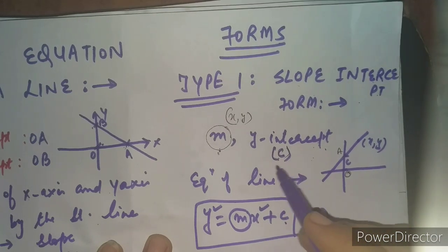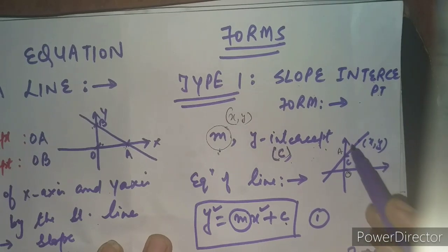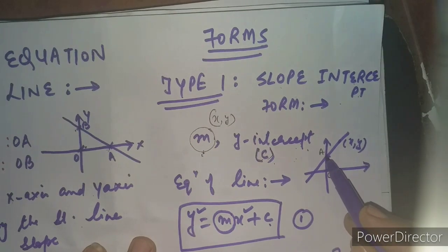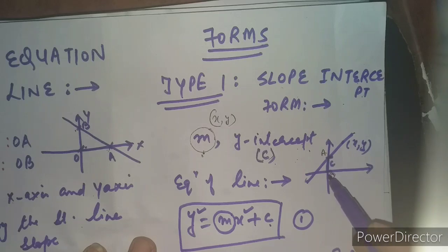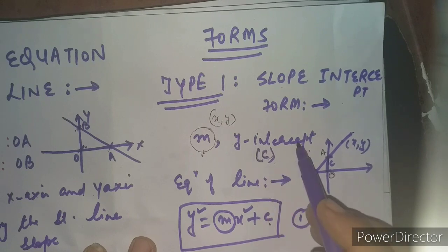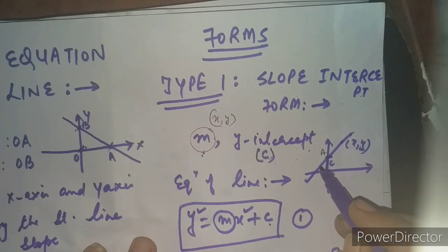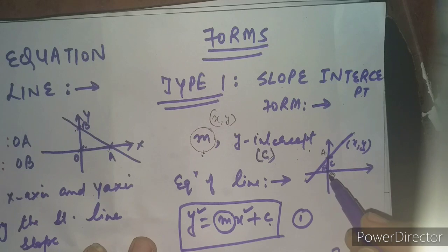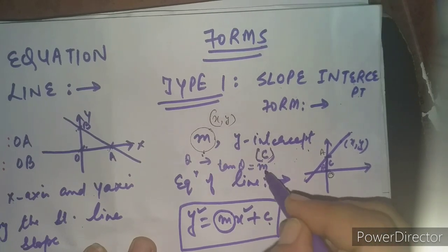The y-intercept is denoted by small c. I have again drawn the setup — this is the x-axis, this is the y-axis. The y-intercept cut by this straight line on the y-axis is denoted by small c. So c is the y-intercept and m is the slope. The slope will either be directly given to you, or you can find it using theta — the angle of inclination. If theta is given, the slope m equals tan theta.